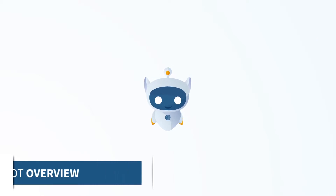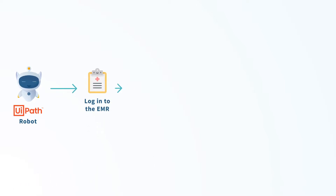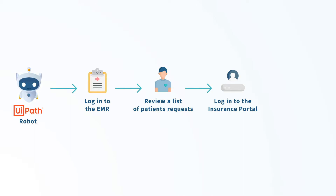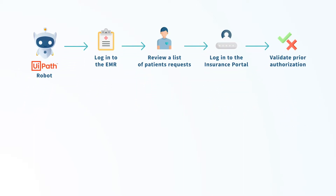Let's take a look at how automation can help remove the manual data entry and speed up the prior authorization process. The bot will begin by logging into the EMR and navigating through a list of patients with prescriptions or procedures that have been requested by their doctors. The bot will review each patient request and then log into the insurance provider's online portal and validate from the list of prescriptions and procedures whether or not a prior authorization is required.